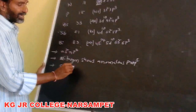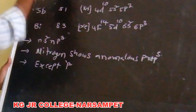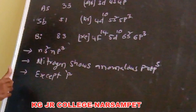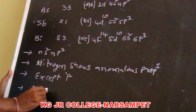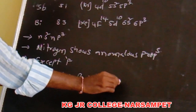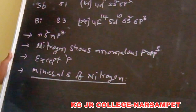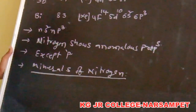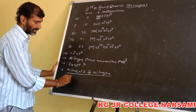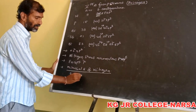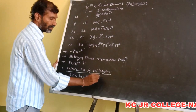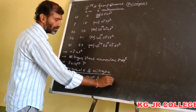Except phosphorus, the remaining elements occur in the native state. Nitrogen can exist in the free state in air — nitrogen is present to the extent of 78% by volume and 90% by mass.